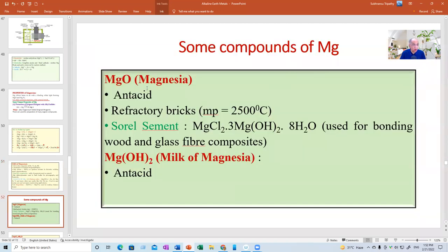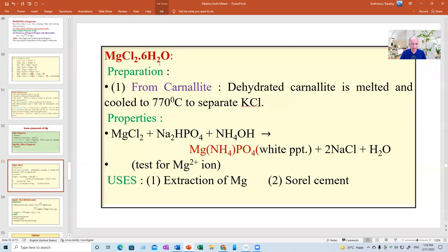Some other compounds of magnesium. Magnesium oxide which is also used as antacid. Refractory bricks in metallurgical furnaces. The bricks, the side walls, are made up of usually magnesium oxide, calcium oxide because they have high melting point. And this is 2500 degrees Celsius. Sorel cement is used for bonding wood and glass fiber composites, make strong bonding between wood and glass fibers, used as adhesives. Milk of magnesia we have already discussed.